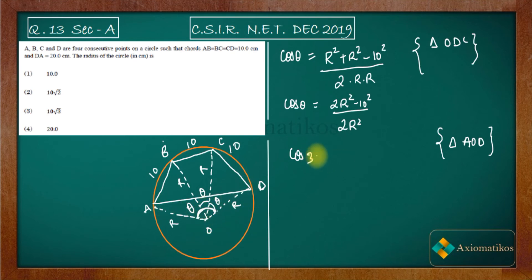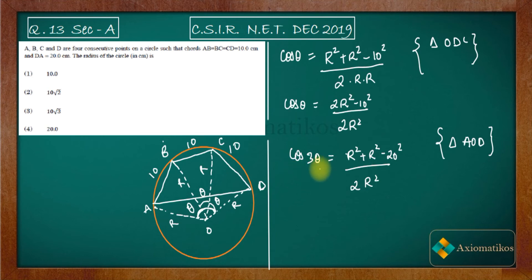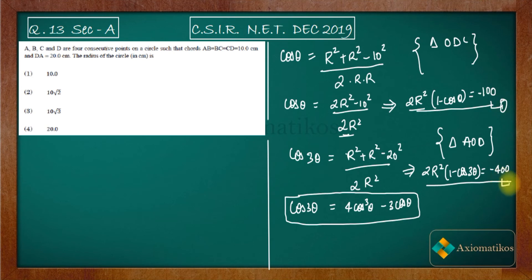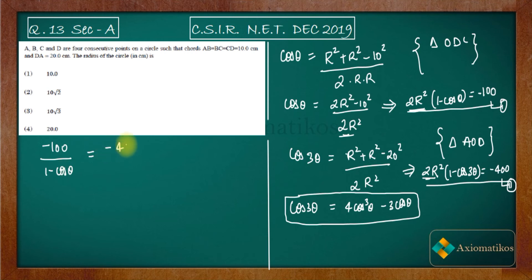Now, the angle at O in triangle AOD is 3θ, since it spans three of our equal angles. Applying the cosine rule on triangle AOD: cos 3θ = (r² + r² − 20²) / (2r²) = (2r² − 400) / (2r²). From equations 1 and 2, we can express 2r² = −100 / (1 − cos θ) and 2r² = −400 / (1 − cos 3θ), giving us 4(1 − cos θ) = 1 − cos 3θ.